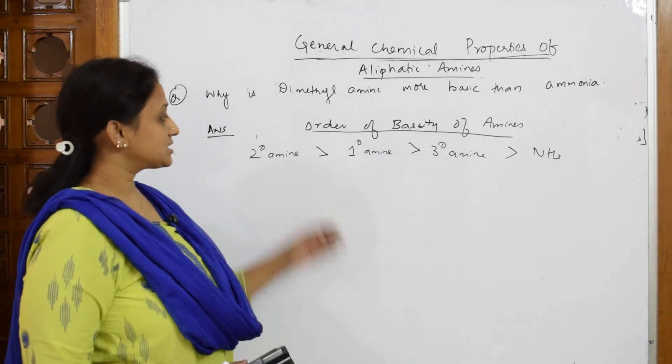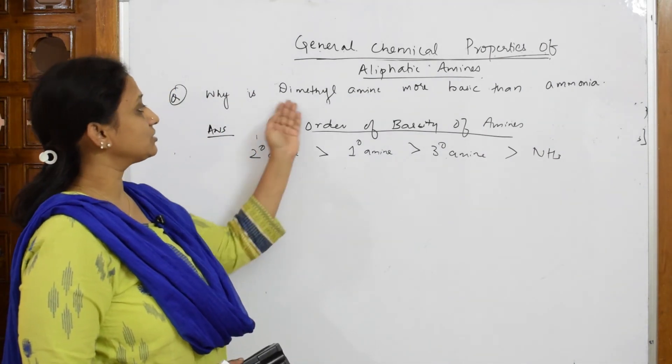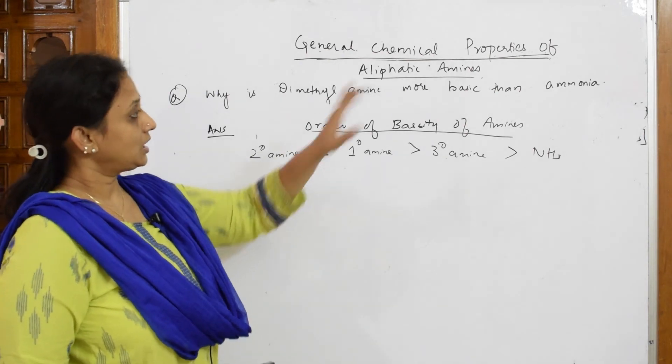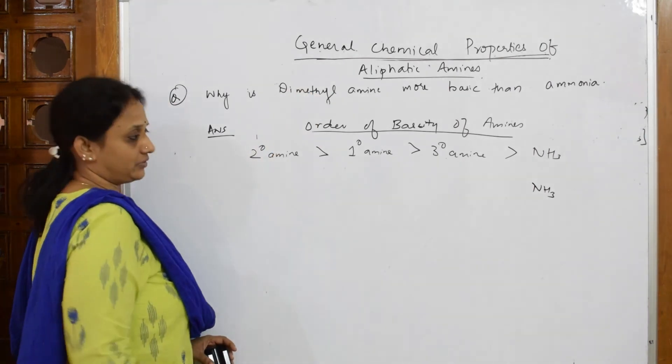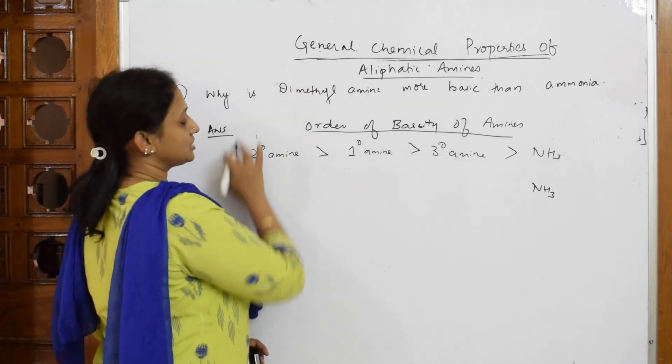Now, how can I relate to the question? Suppose if I am taking this concept and relating to the question. Ammonia is this ammonia here on the order. Dimethyl amine, they have given. Let us write the formula. Let us write the structure.